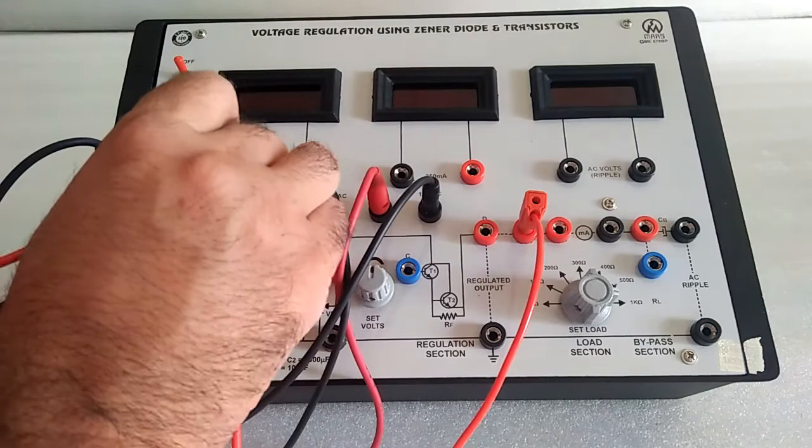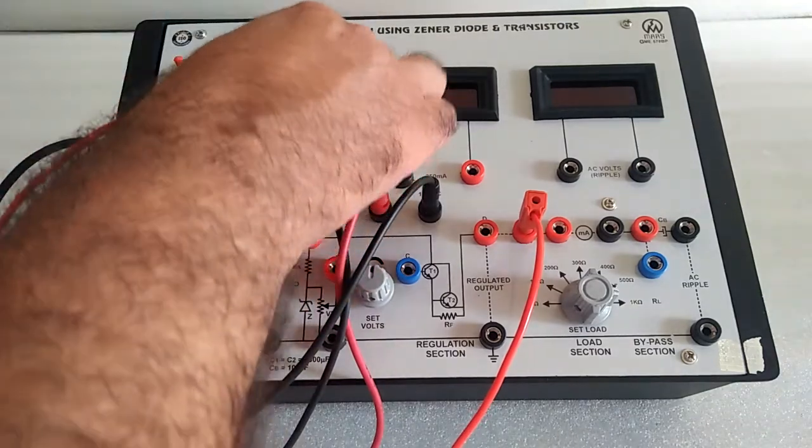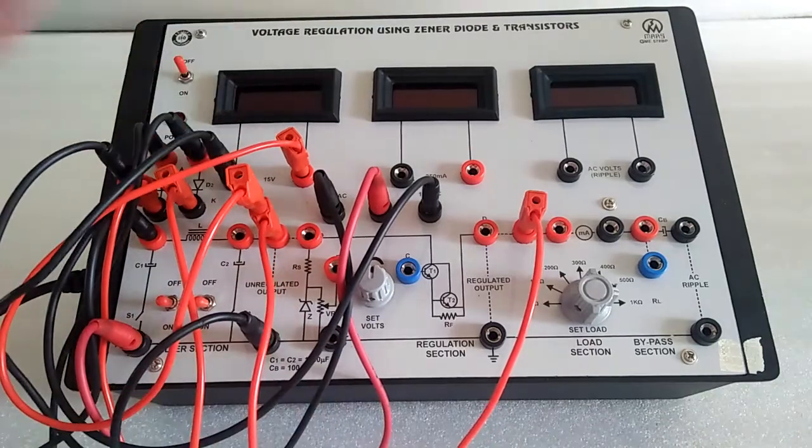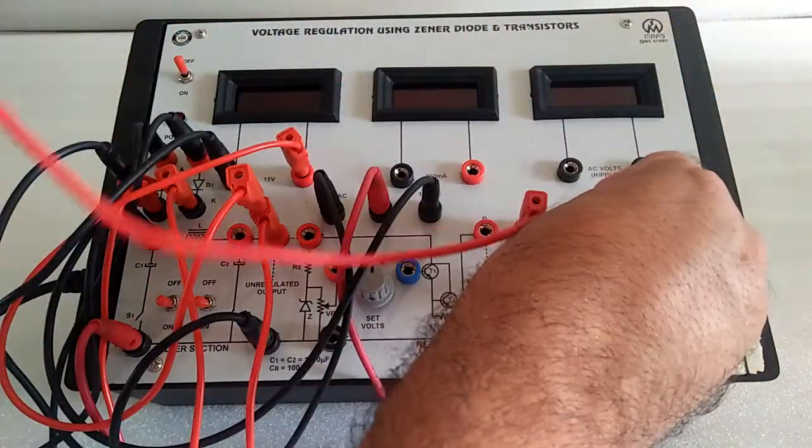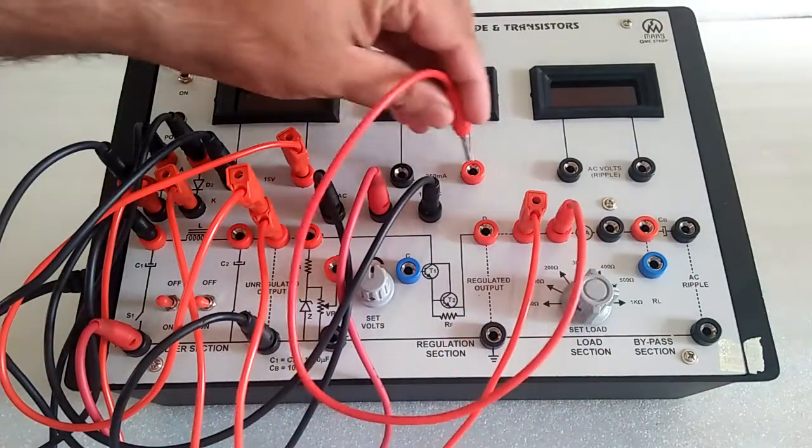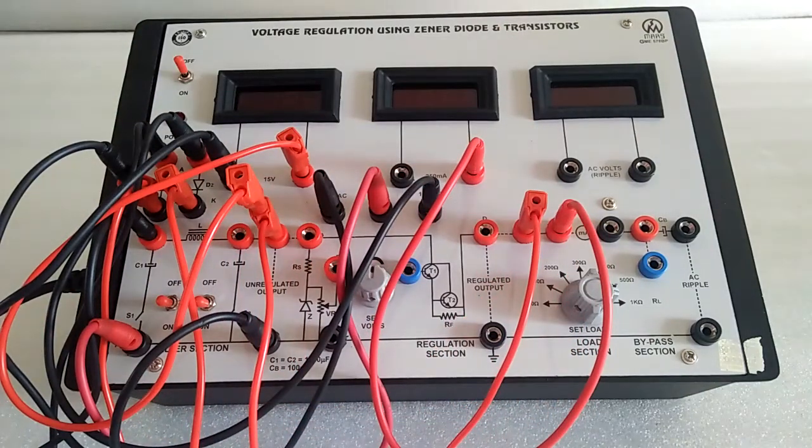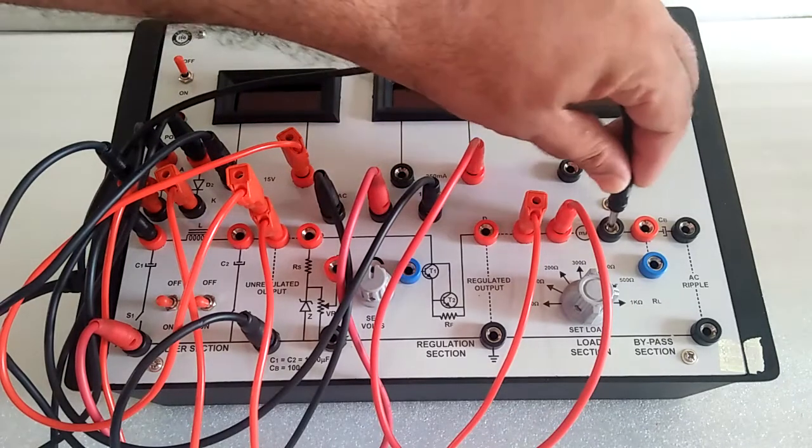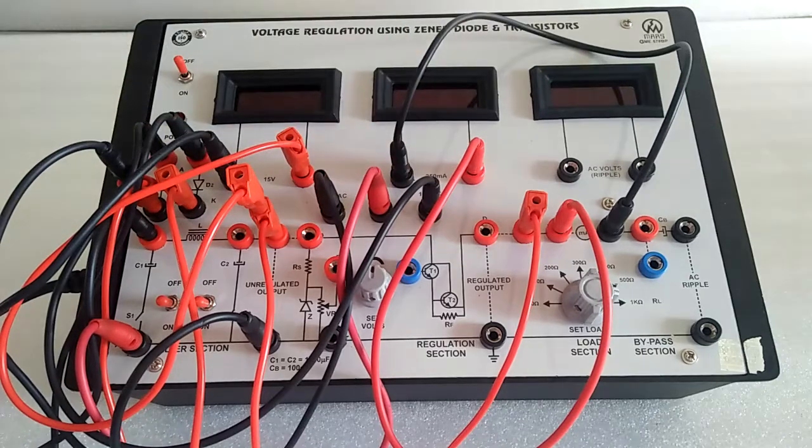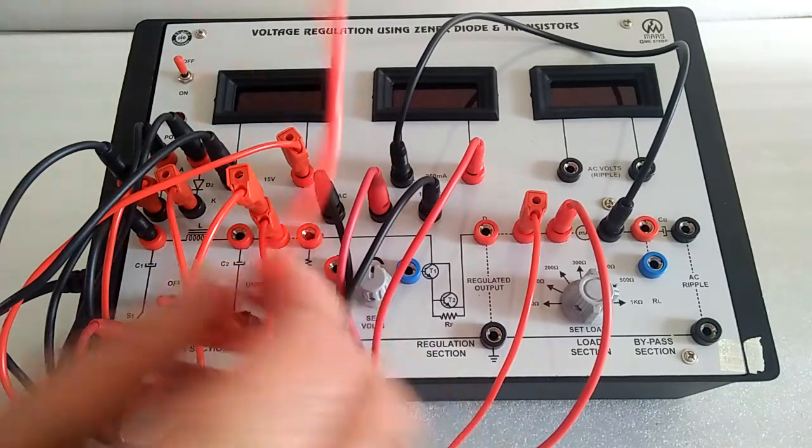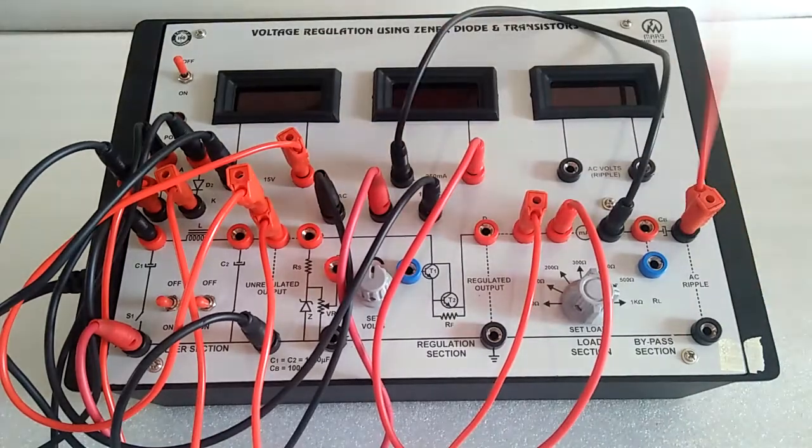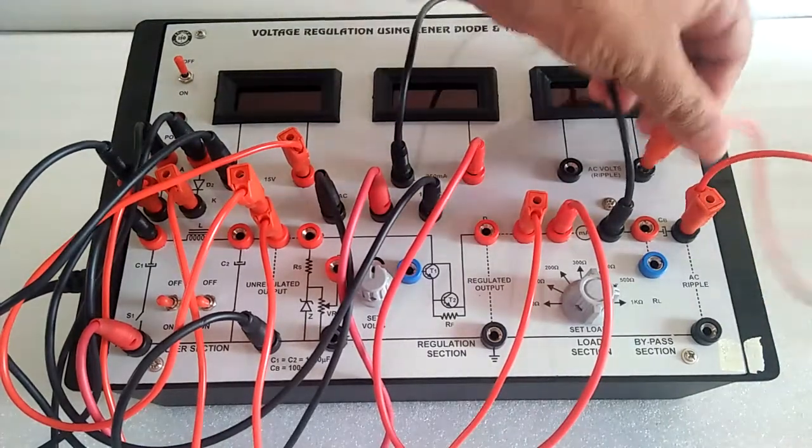At the same time, we connect in parallel to see the voltage, with the current meter in series. We also connect the AC ripple meter.